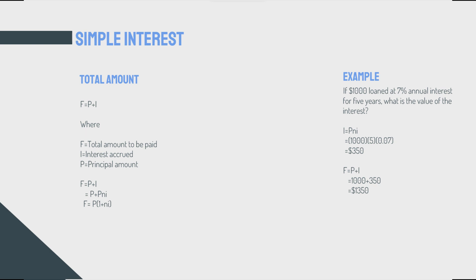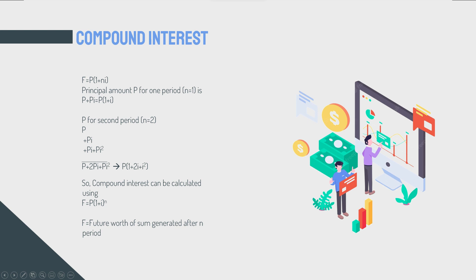Now, the compound interest. We said that we can derivate F to look differently. We said F equals P plus I, or F equals P multiplied by (1 + n*i). Now the principal amount P for one period, n equals 1, would be P + Pi, which would be P(1 + i). Plus two, i + i squared. Now P for the second period would be P + Pi, then plus Pi + Pi squared, which would be P multiplied by (1 + 2i + i²).